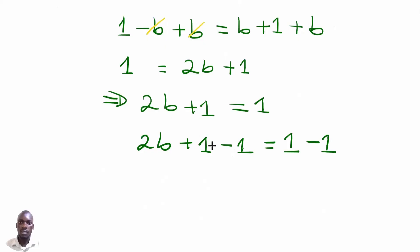Then from here, critically, we shall see that this 1 and this 1 cancel out and remain with 2b on the left hand side being equal to 1 take away 1. The result will be 0.